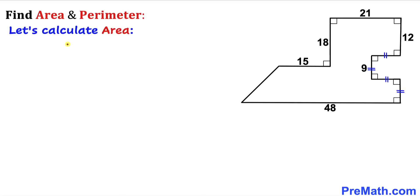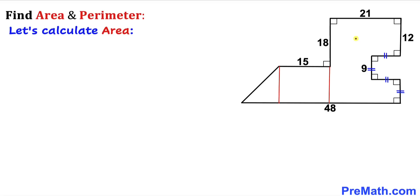Here's our very first step: let's calculate the area of this given shape. To make our job easier, I'm going to divide this shape into three parts by drawing two perpendicular lines. As a result, the shape has been divided into three parts. I'll call the area of the first part A₁, the second A₂, and the third A₃.